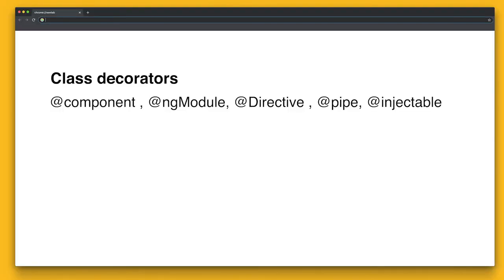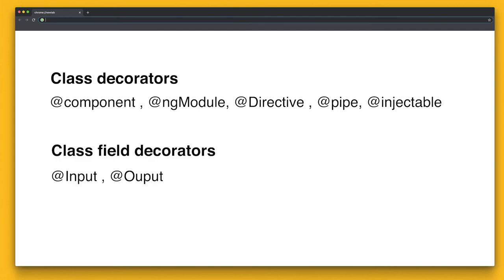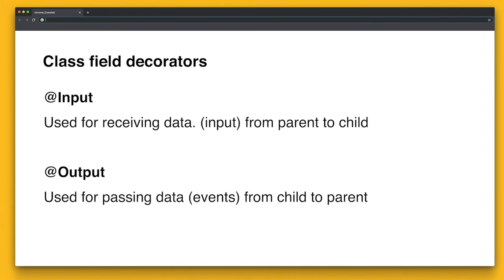One more thing: we have class decorators we mentioned before, and we also have class field decorators which we haven't mentioned yet. Class field decorators are decorators like @Input, used for receiving data from parent to child, and @Output, used for passing data from child to parent. You can pass a string or object from parent to child using @Input. When doing @Output, you're actually passing an event, and via events you catch the data and manipulate it.